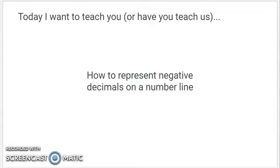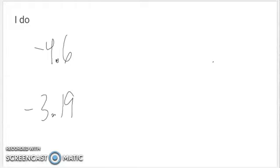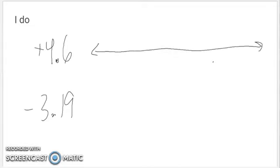I'm going to tell you how to represent negative decimals on a number line, starting with the ones you just did. Before I get to the real deal with negative four and six tenths, let me think about it. If I were to do positive four and six tenths momentarily, I would start at zero — one, two, three, four, five — and positive four and six tenths would be past four but not all the way to five. You'll notice I keep saying 'four and six tenths.' If you know how to say it, you know how to put it on a number line.